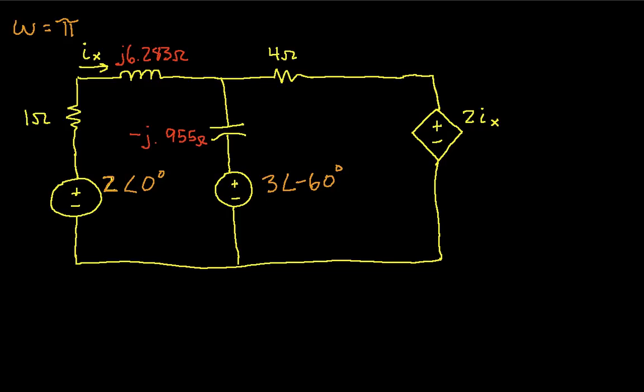Step three is to determine the loop currents or the mesh currents. Actually, I guess first identify the meshes, identify the mesh currents and get some equations in terms of the mesh currents. You can see that this circuit has two meshes and so we'll define a current on the left mesh as I1 and a current on the right mesh as I2. And now we just apply Kirchhoff's voltage law around each of the meshes.